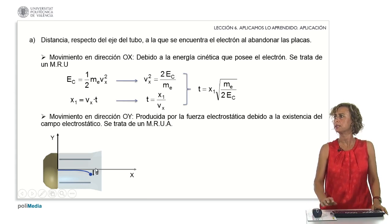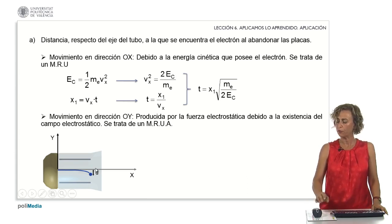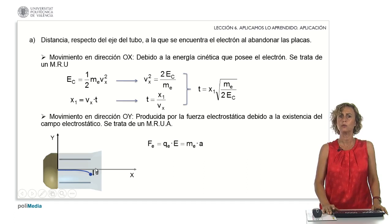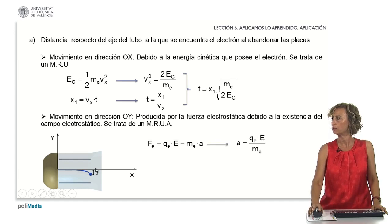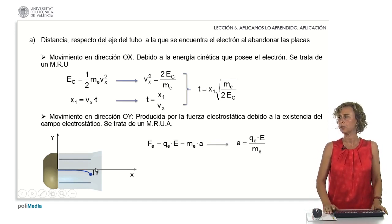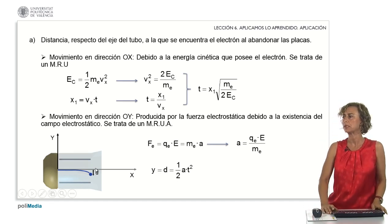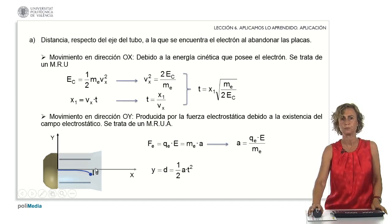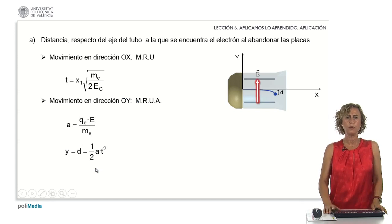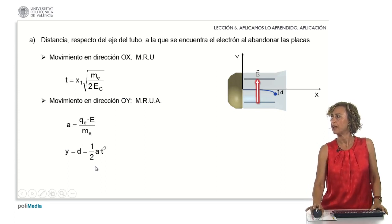Along the y-axis, we have said this is uniformly accelerated rectilinear motion since we have an electrostatic force. That force equals q — the charge of the electron — times the field, and as any force equals mass times acceleration, we can express the acceleration as a function of the electrostatic field. The deviation — that is, the space traveled along that axis — is equal to one half times a times t squared, because it is uniformly accelerated rectilinear motion. We have the time and acceleration as functions of the problem data, and substituting gives the deviation.